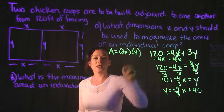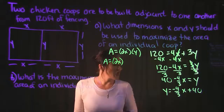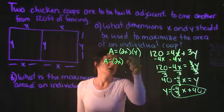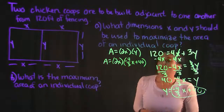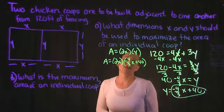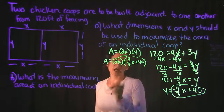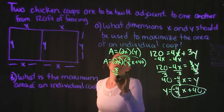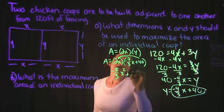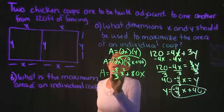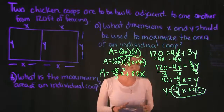Now I take that expression for Y and plug it into the area formula. Area equals 2X times the quantity (negative four-thirds X plus 40). Distributing 2X across: 2 times negative four-thirds gives negative eight-thirds, and X times X gives X squared; then 2X times 40 gives 80X. So area equals negative eight-thirds X squared plus 80X.